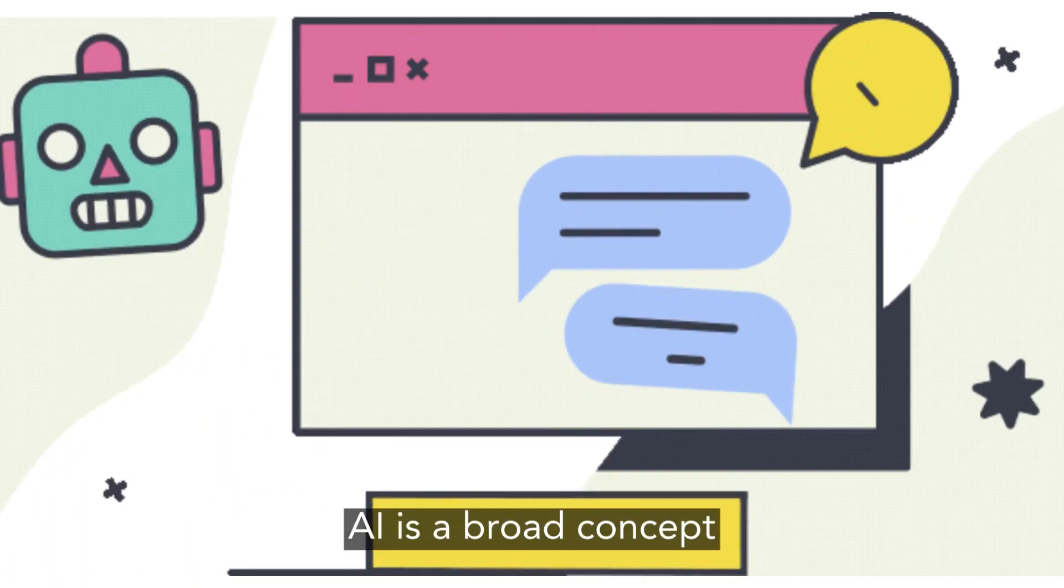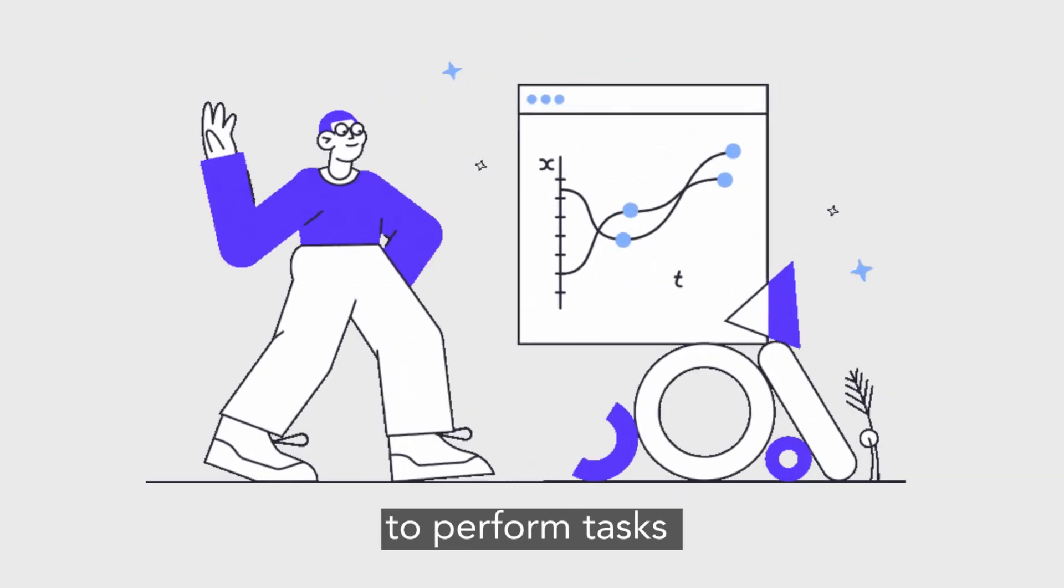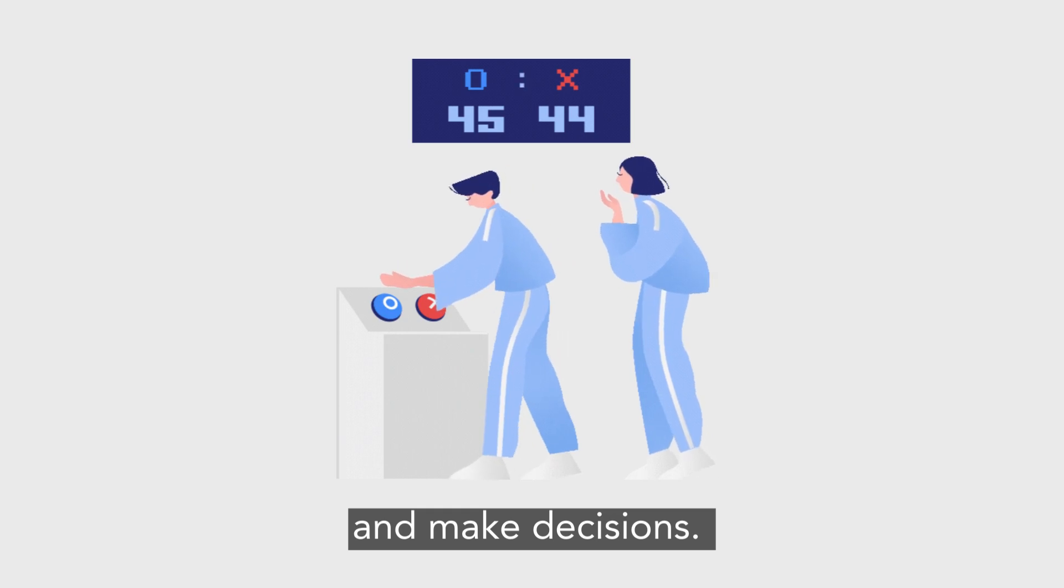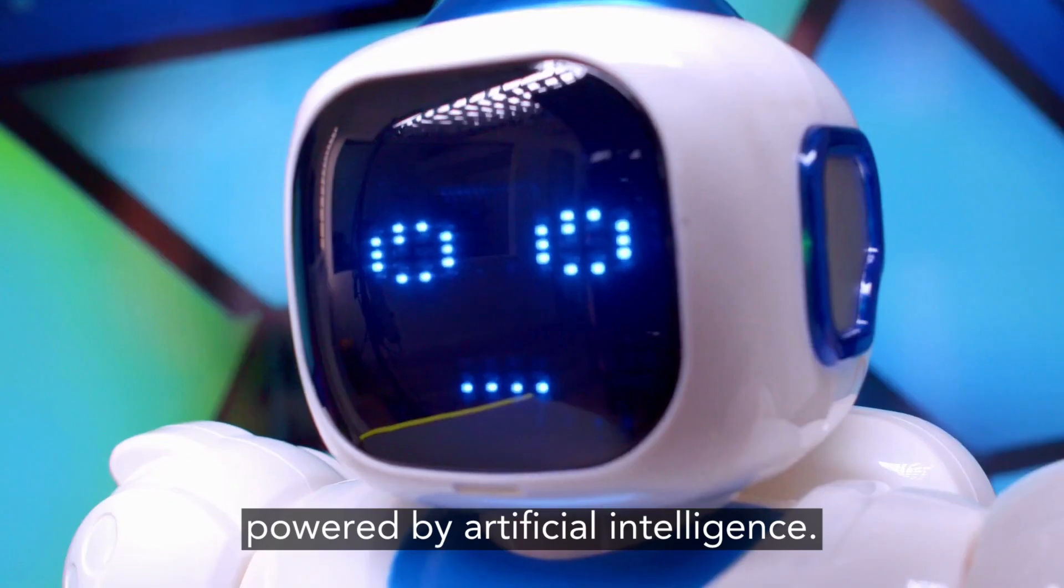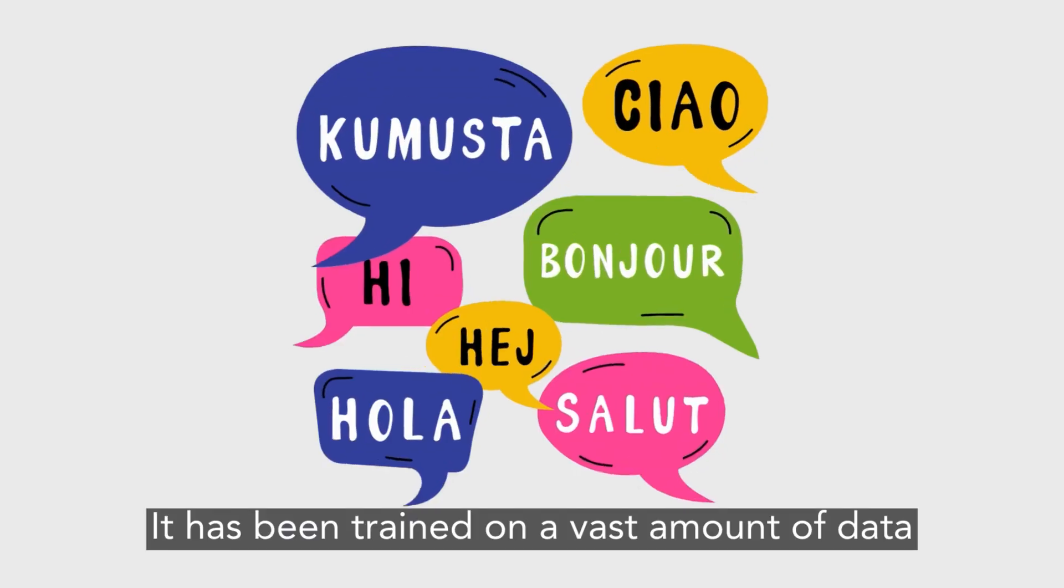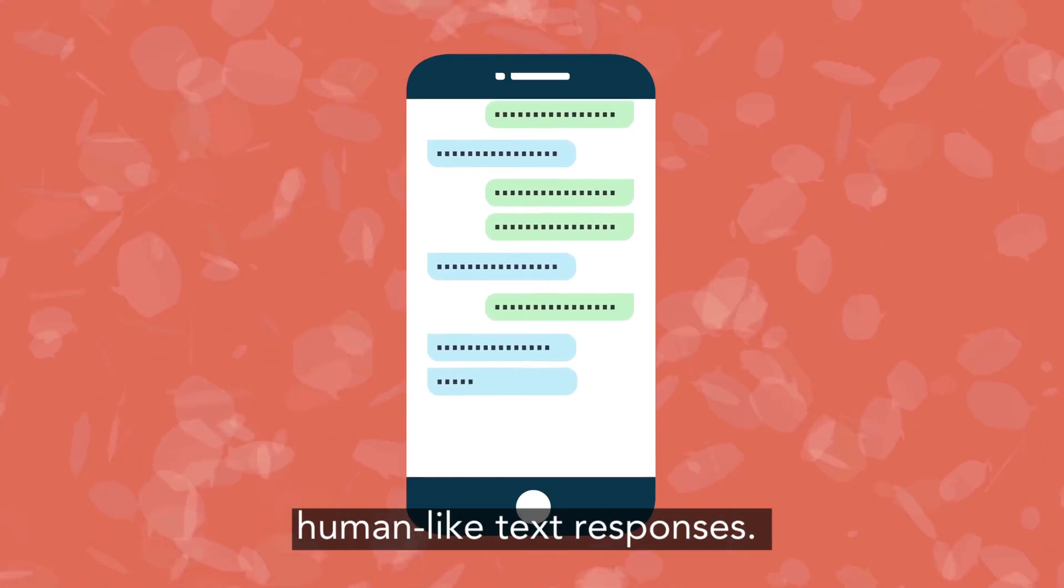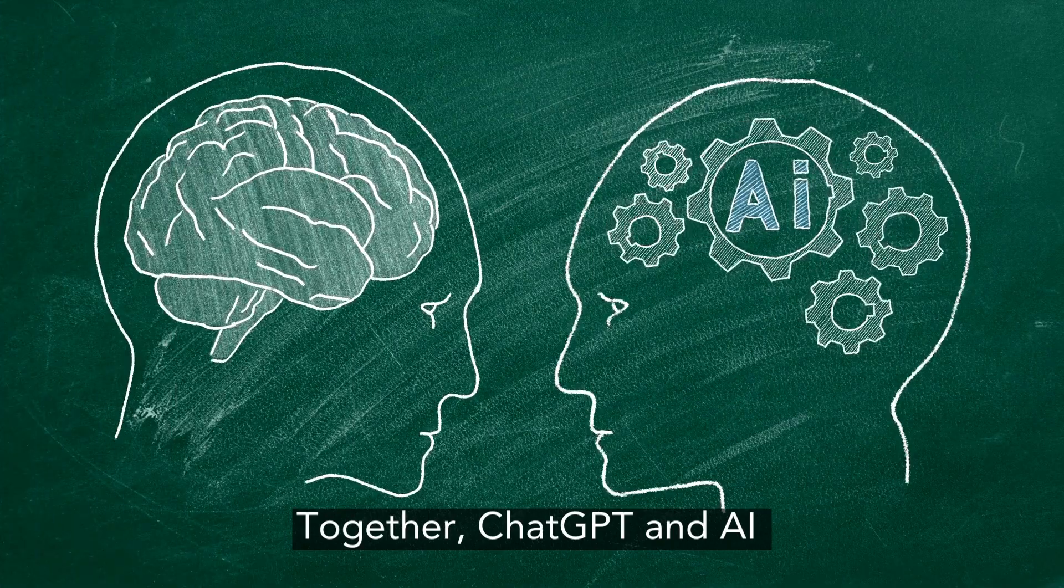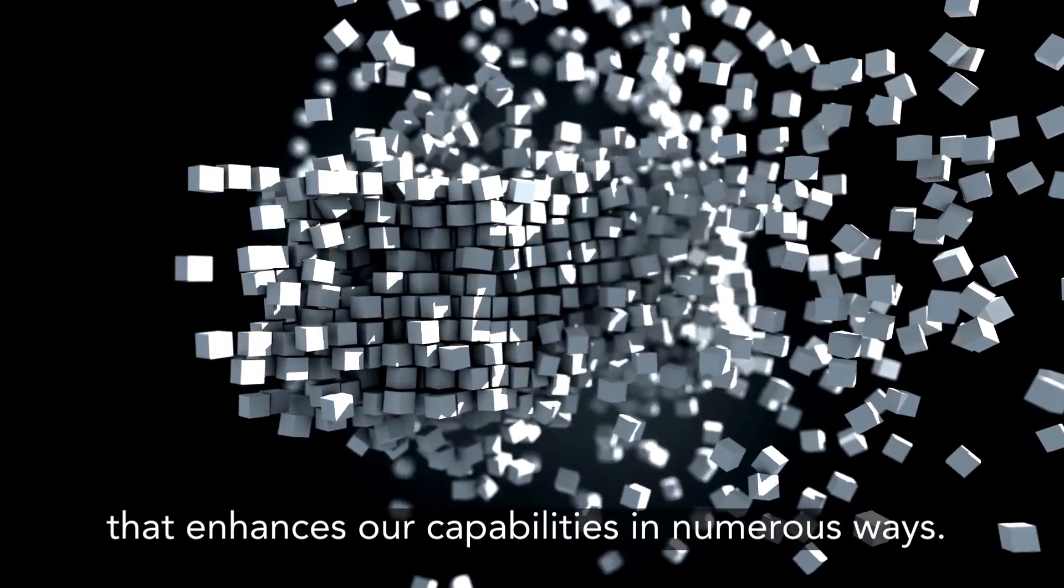AI is a broad concept that encompasses various technologies that mimic human intelligence to perform tasks and make decisions. ChatGPT, on the other hand, is an advanced language model powered by artificial intelligence. It has been trained on a vast amount of data to understand and generate human-like text responses. Together, ChatGPT and AI form a dynamic duo that enhances our capabilities in numerous ways.